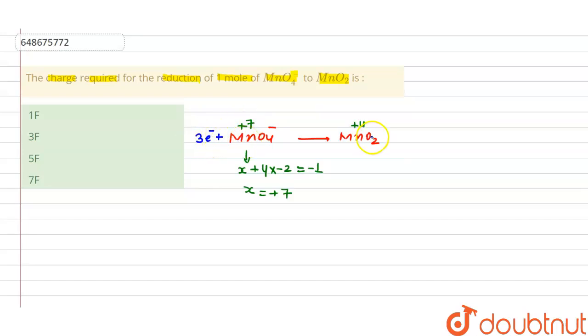Three will be cancelled so that +4 will be there. That is a simple trick. Now we have to find in Faraday. Remember that one mole of electron, from the Faraday's law of electrolysis, one mole of electron contains one Faraday of charge.